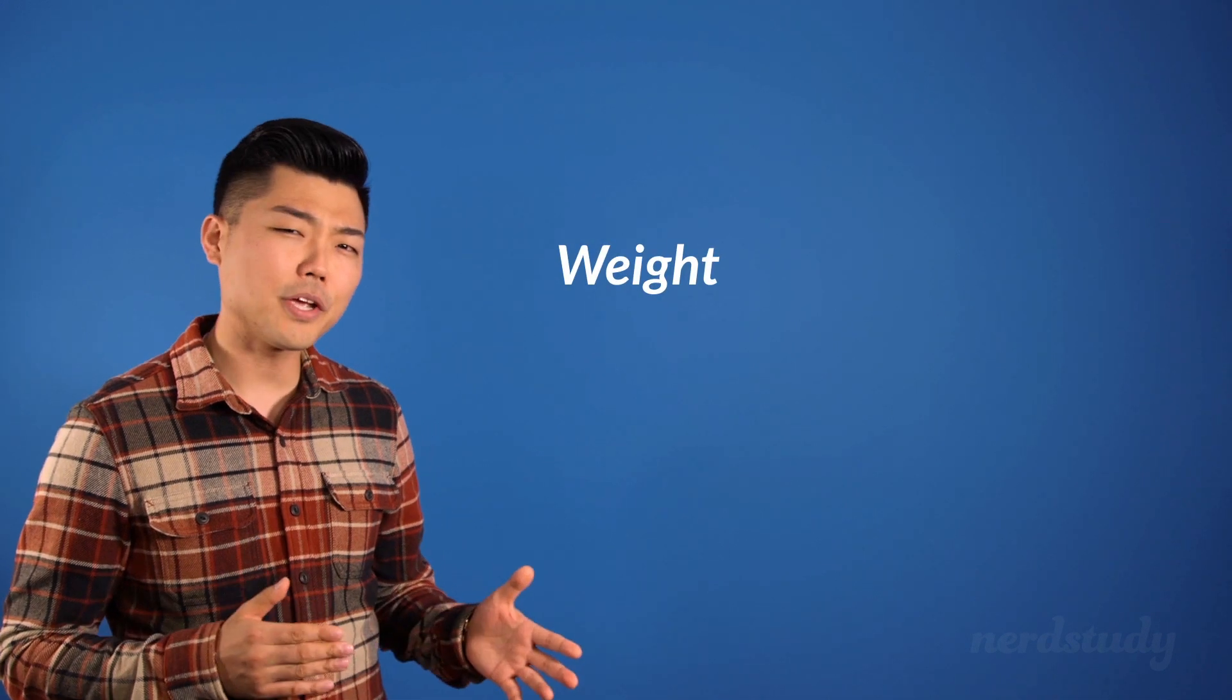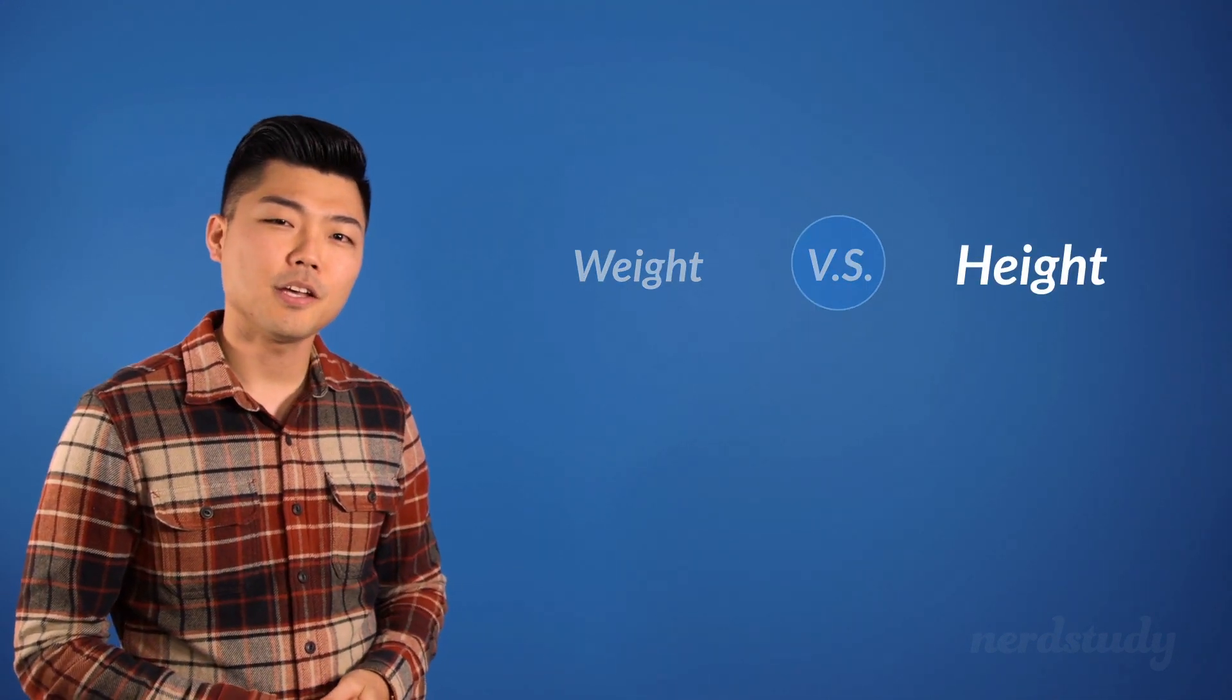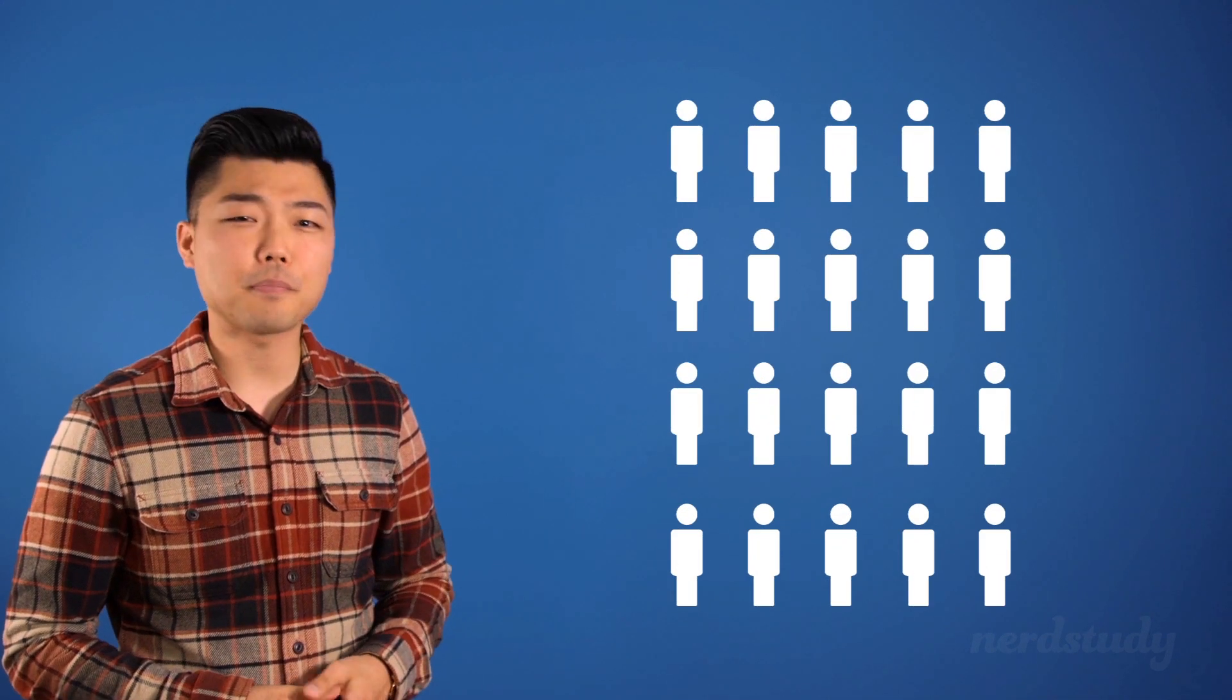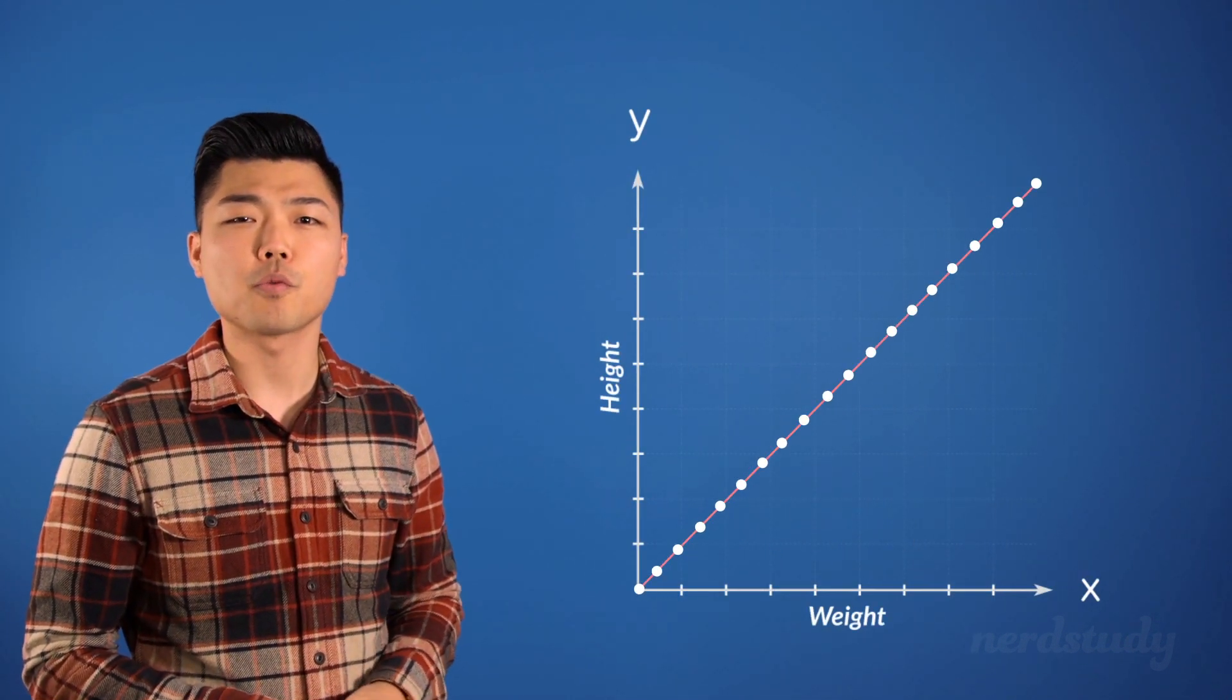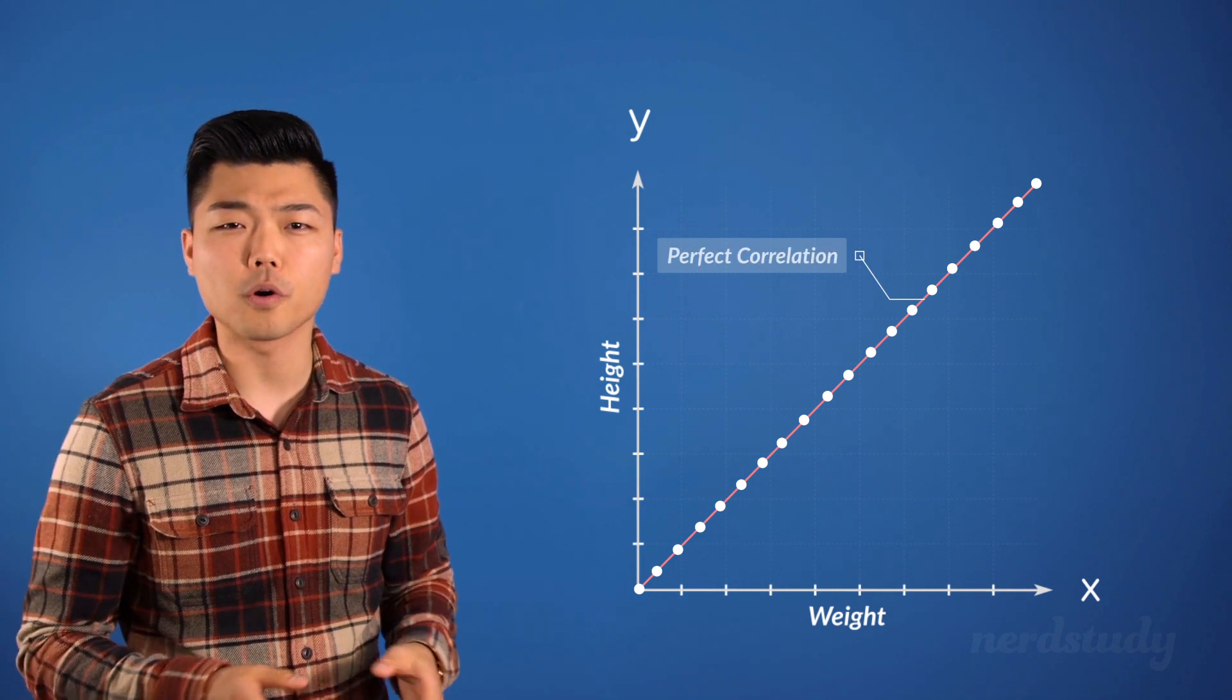We can also see examples of nonlinear relationships when we look at something like weight versus height. If we surveyed 20 different people we would likely not see a perfect straight line with what we call a perfect correlation.